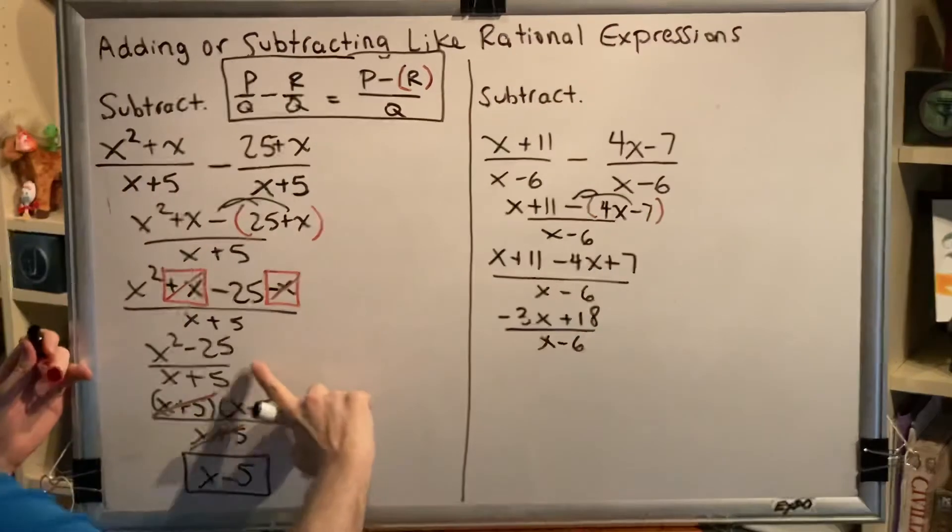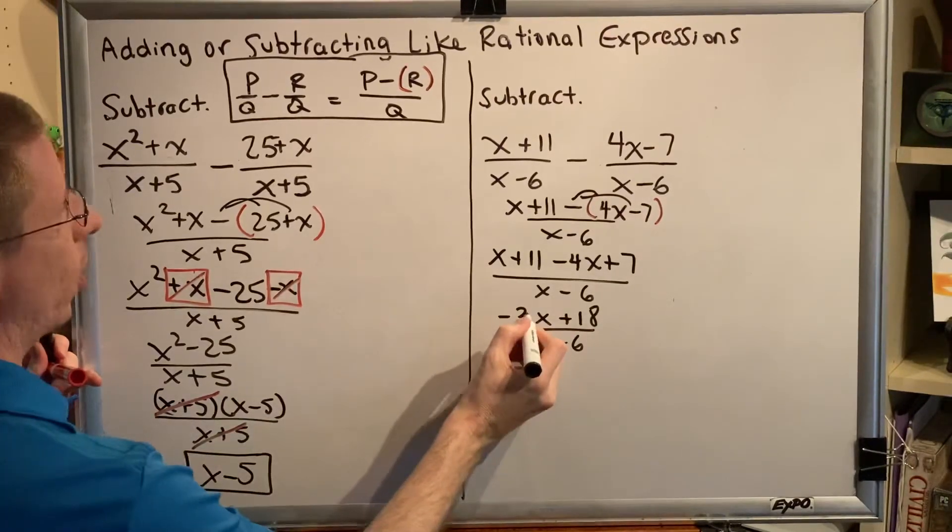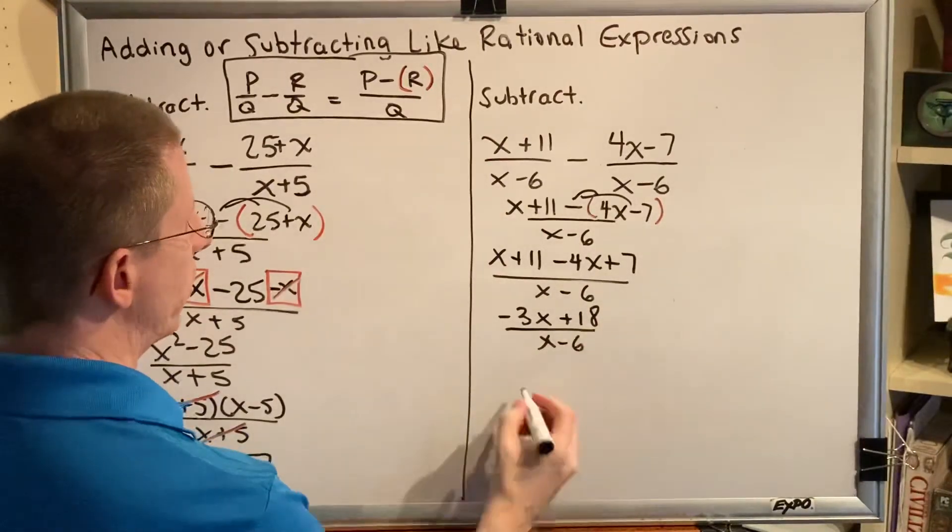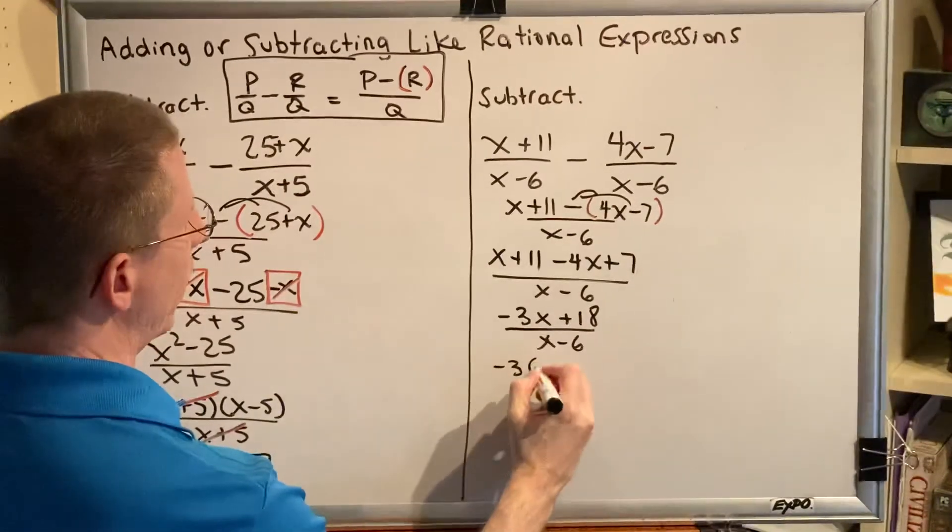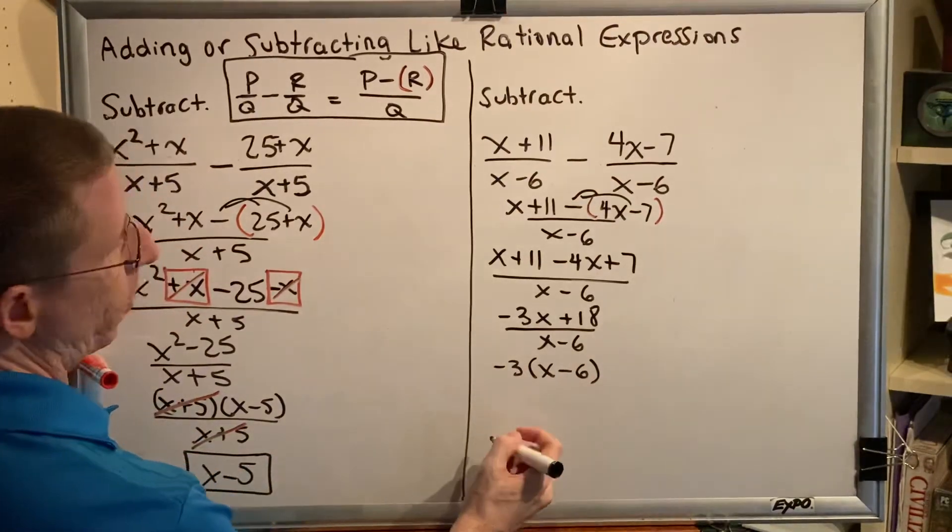Just as we did in the problem that we first completed, we must try to factor both numerator and denominator. The GCF of the numerator is negative 3, and when we take it out, it leaves us with an x subtract 6. We can check this with the distributive property.